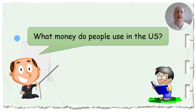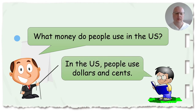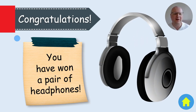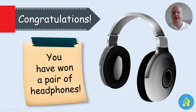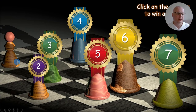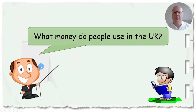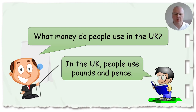In this activity you can invite two students from one team to participate in a dialogue — one asks the question, the other answers — or it could be a student from each team. They need to answer correctly. The correct answer is 'In the US, people use dollars and cents.' Then you click next and — congratulations, you have won a pair of headphones! I guarantee they're going to love it.